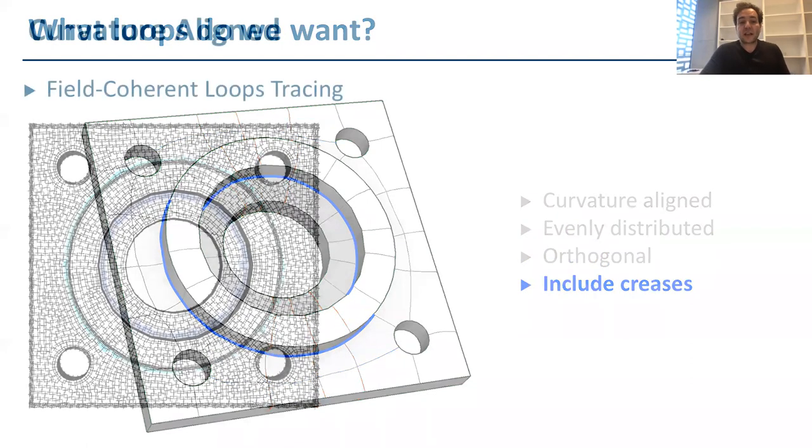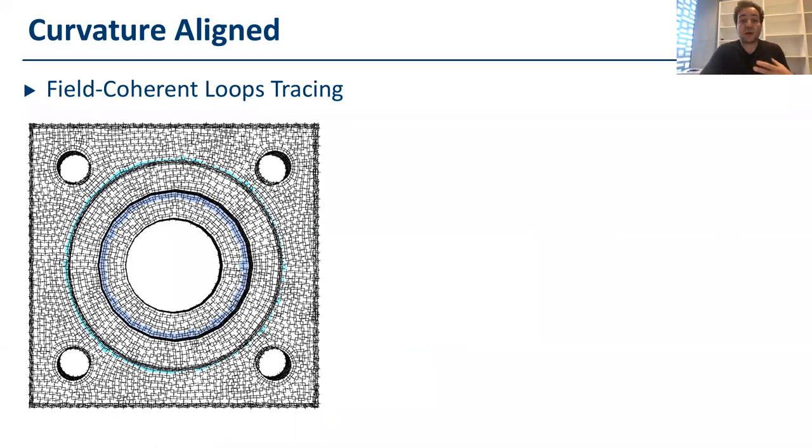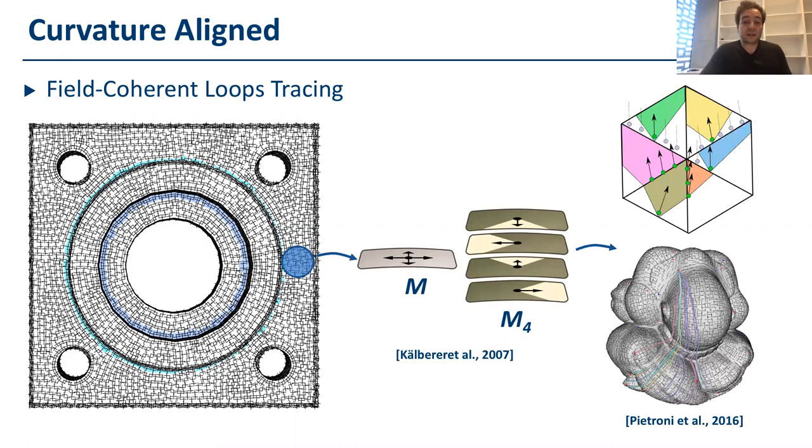So, let's see step by step how we can achieve all these desiderata in our loop sampling strategy. To achieve curvature alignment, we trace loops using the field coherent tracing method proposed by Pietroni and colleagues. This approach allows us to keep a coherent direction of the input cross field while we trace the loops.